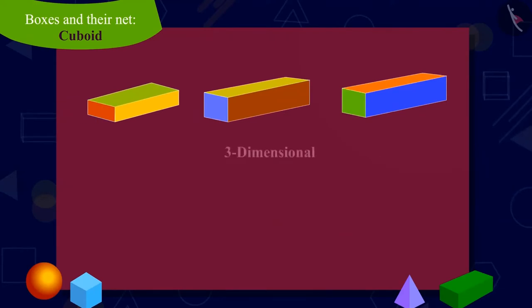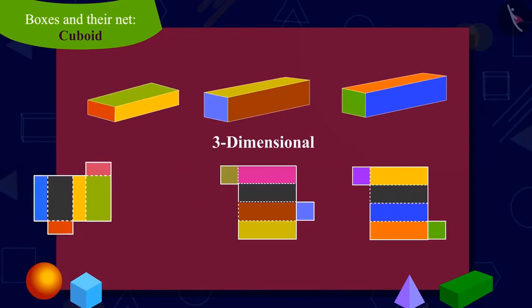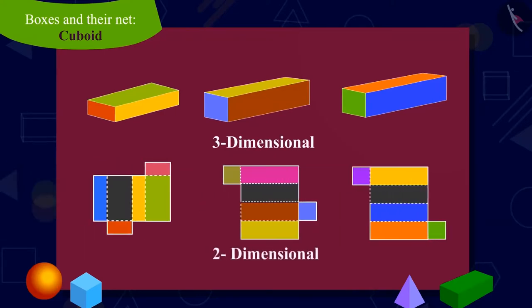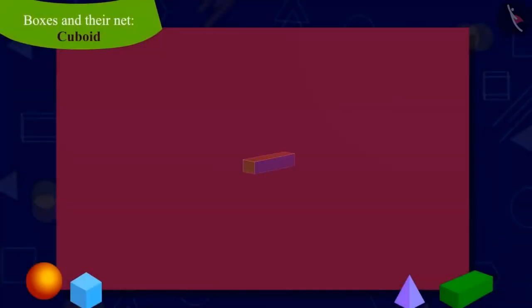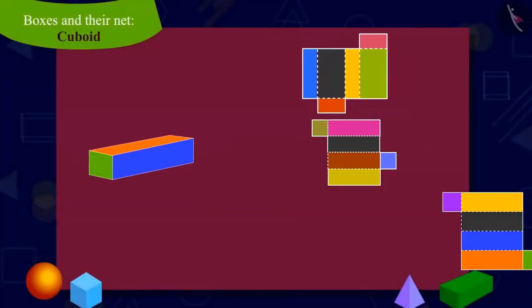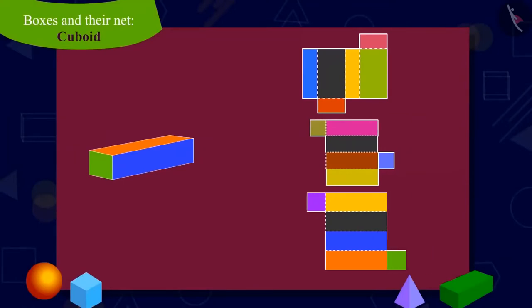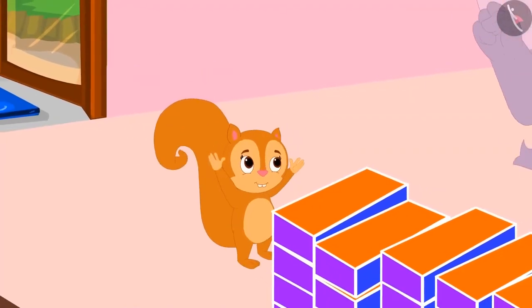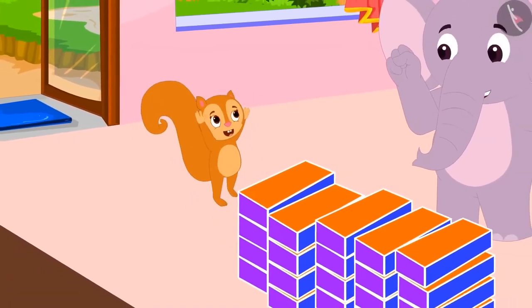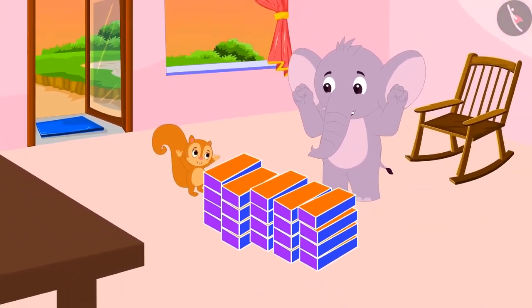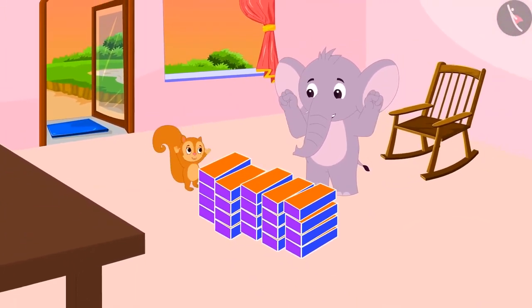Yes, children, many two-dimensional nets of any three-dimensional shape, such as cuboids, can be made. We can make any box by folding various types of nets. Chanda was happy to learn about the cuboid shaped net. And Chanda and Appu packed all the sweets.